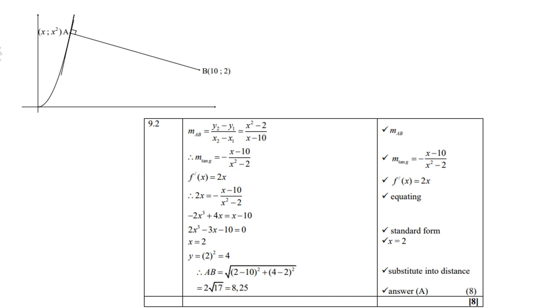Therefore, the tangent of M will be the inverse of (x squared minus 2) over (x minus 10) with a negative in front. So therefore, minus (x minus 10) over (x squared minus 2).